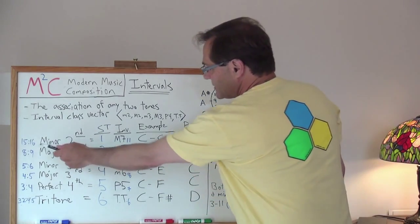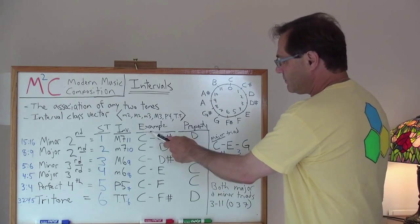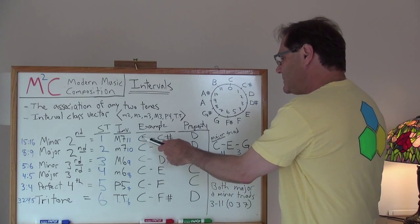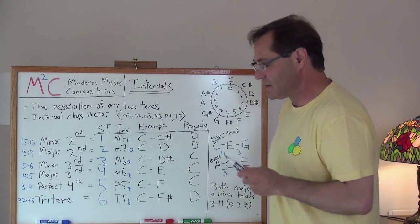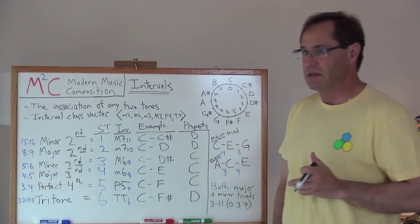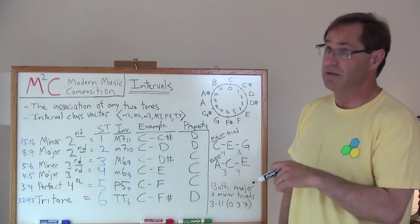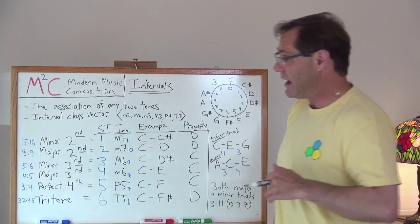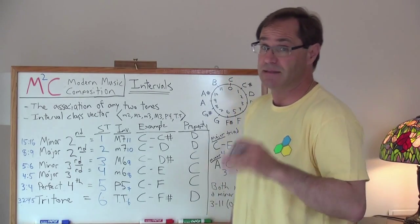A minor second has a ratio of 15 over 16. How do you get that ratio? Quickly I'll review. In this example, a minor second has one semitone. An example would be from C to C sharp. So C, middle C has a frequency of 261 hertz, and I think C sharp has a frequency of 277 hertz. If you take 277 divided by 261, you're going to get 1.06. And if you take 16 divided by 15, you'll get 1.06. That's where these ratios come from. It's that simple.